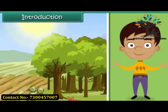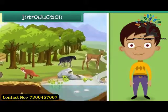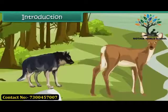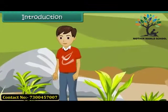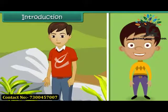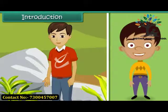Different life forms are present around us — plants, insects, animals, and of course human beings. Every living thing is made up of different body parts, and each part has a specific task assigned to it. In this lesson, we will look at the parts of a plant body and understand their functions.